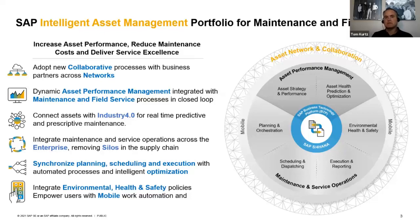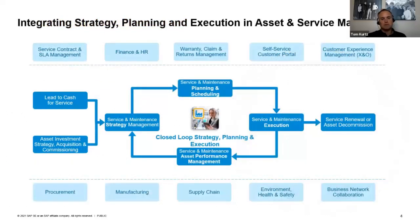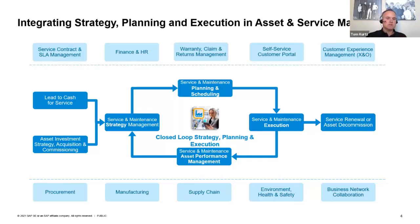The next slide gives another view from a business process standpoint. Whether it be a lead-to-cash scenario for the field service example, or the need to look at asset investment challenges through a work order process — going through service and maintenance strategy management, on to planning, execution, and all the way back again — you can see how we tie all those closed-loop processes together. You also see all those complementary processes on the outside, whether that be finance and HR, procurement, or other parts of the supply chain and manufacturing.